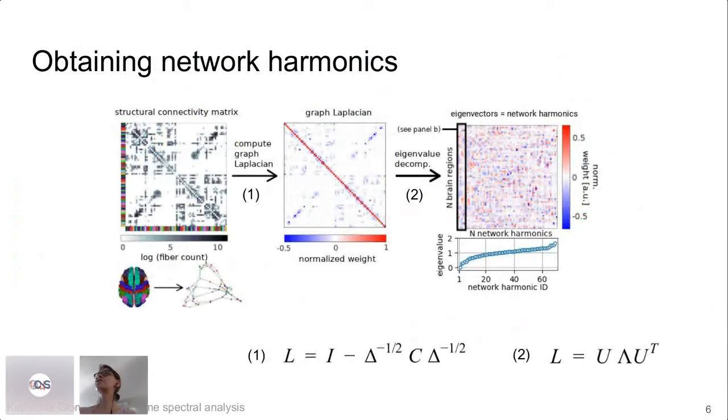So this is this graph signal processing framework that I mentioned, and the graph signal in our case now is EEG, high density EEG, which is combined with these structural images and an inverse model to get the brain activity directly in the space of the gray matter. And I'm using the same parcellation that we use for the diffusion imaging, of course. So then we have this signal that lives on the graph.